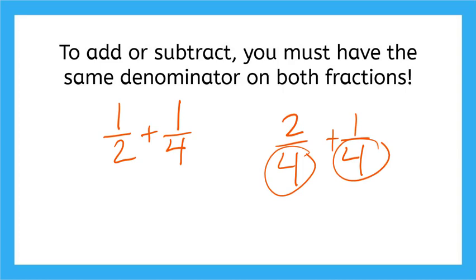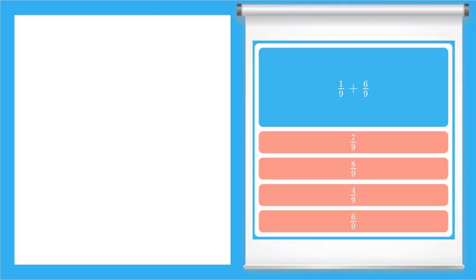Let's take a look at a few problems from our game and see how this works. Here I have the fractions one-ninth plus six-ninths. When you add fractions, you do not need to add the denominator—you only add the numerator.